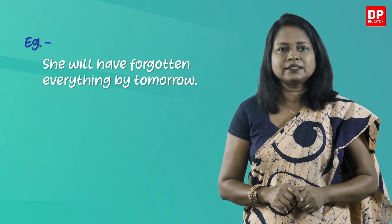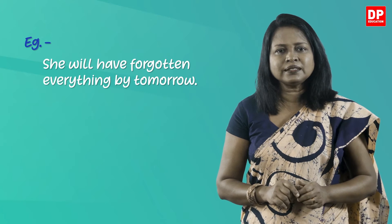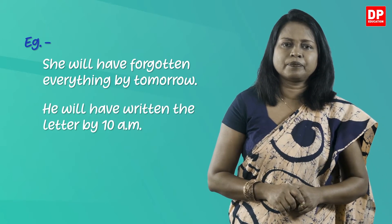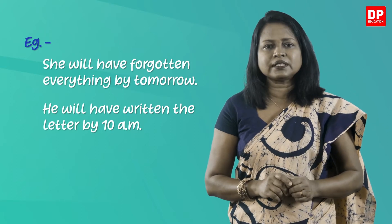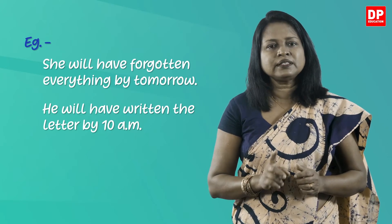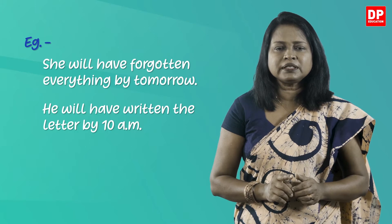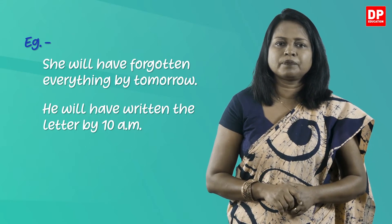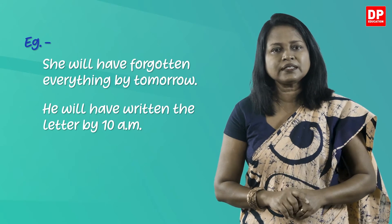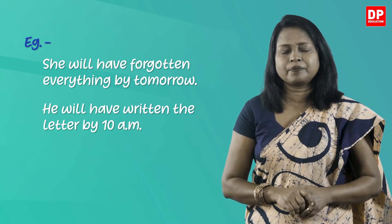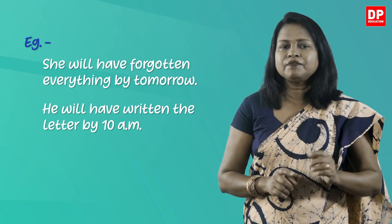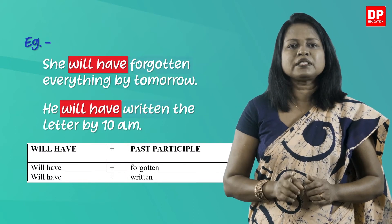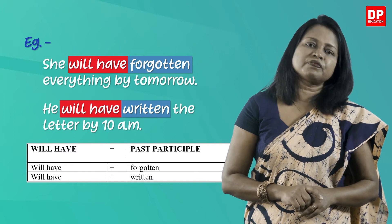Now look at the second sentence: 'He will have written the letter by 10 am.' According to this sentence, the action of writing the letter will be completed at a particular point of time in the future, indicated as 'by 10 am.' In future perfect tense, we use will have plus the past participle form of the verb.